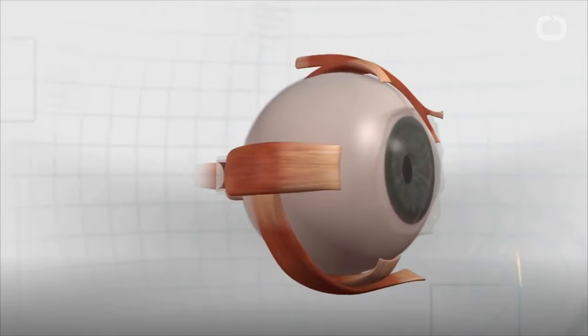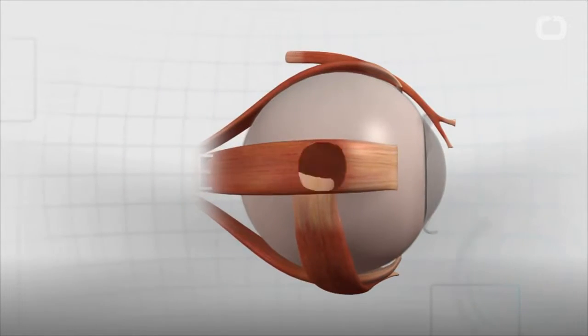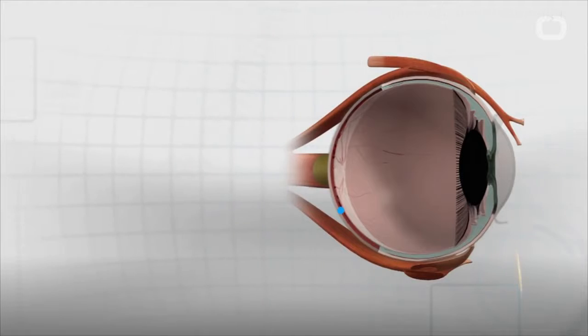Scientists at the National Eye Institute found that tiny tube-like protrusions called primary cilia on a layer of cells in the back of the eye, known as the retinal pigment epithelium,